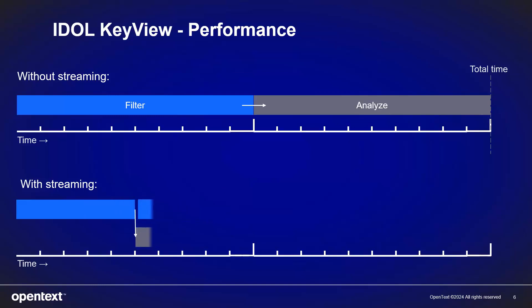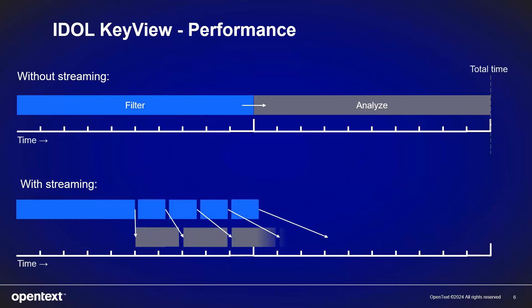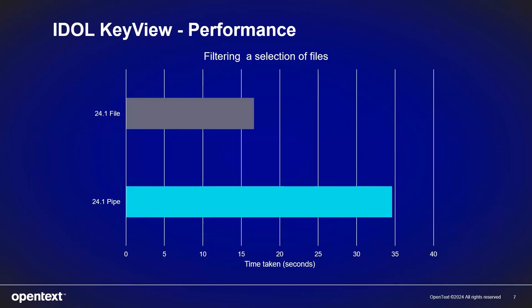Before 24.2, if you wanted to stream like this, you had to enable the pipe streaming method. The downside of this was that for many files, it took longer to filter the whole file than if you were not using pipe streaming. To give an idea of this, I filtered around 260 randomly chosen files across a variety of formats. You can see that for that set, using pipe streaming took about twice as long as using the APIs that take file path.